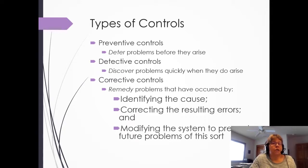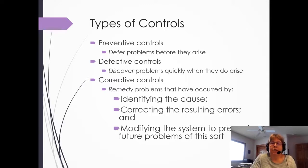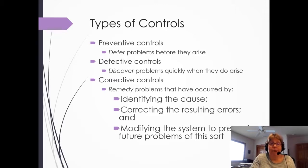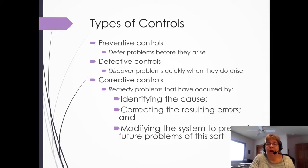Just as important are detective controls. We can't prevent everything, but we want to detect problems as quickly as possible. A common example is a bank reconciliation — doing those on a timely basis can help determine if there is a mistake in recording cash, or if there is a potential fraud because things are not matching the records to the bank's statement.